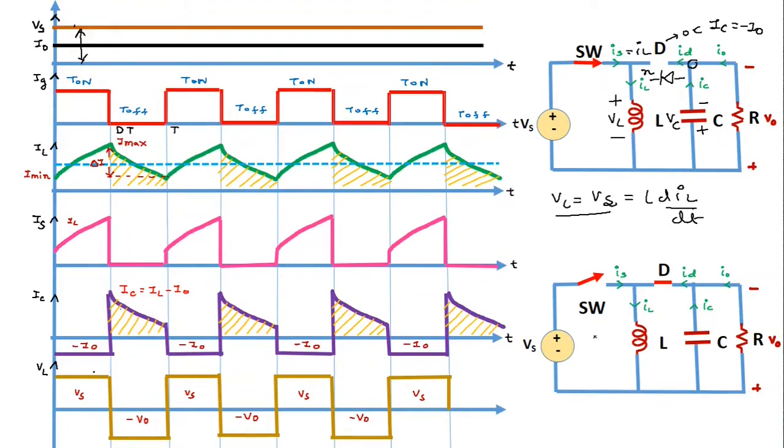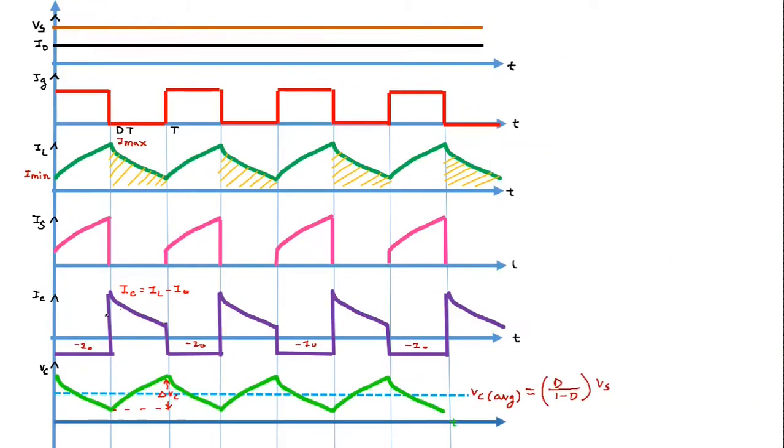The inductor voltage VL equals VS during the ON period of the switch. Since the initially charged capacitor is connected to the load resistor, it discharges through the load. Therefore, the voltage across the capacitor decreases from maximum to minimum value during the ON period of the switch.